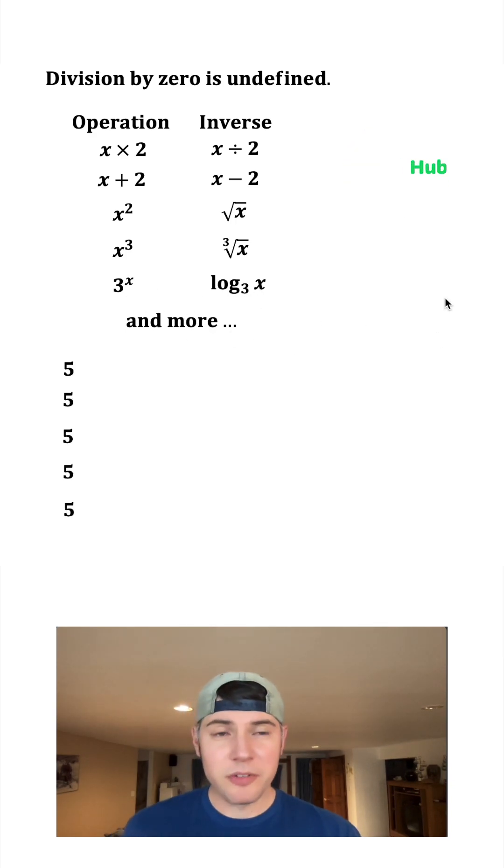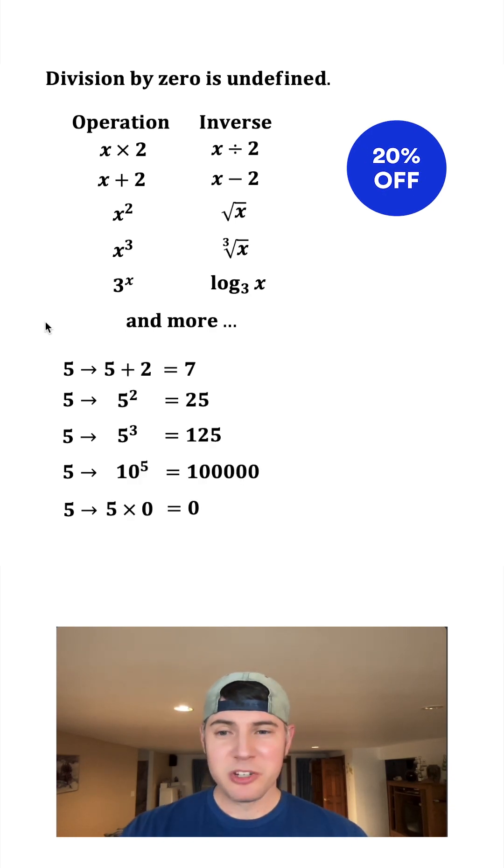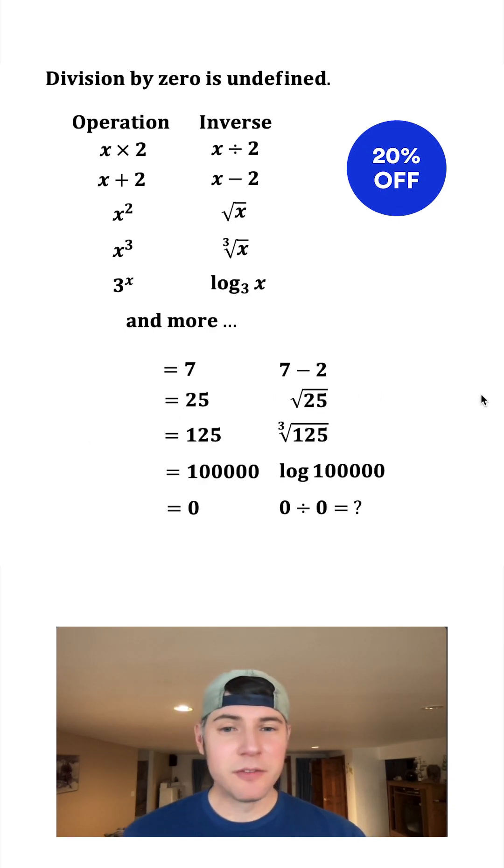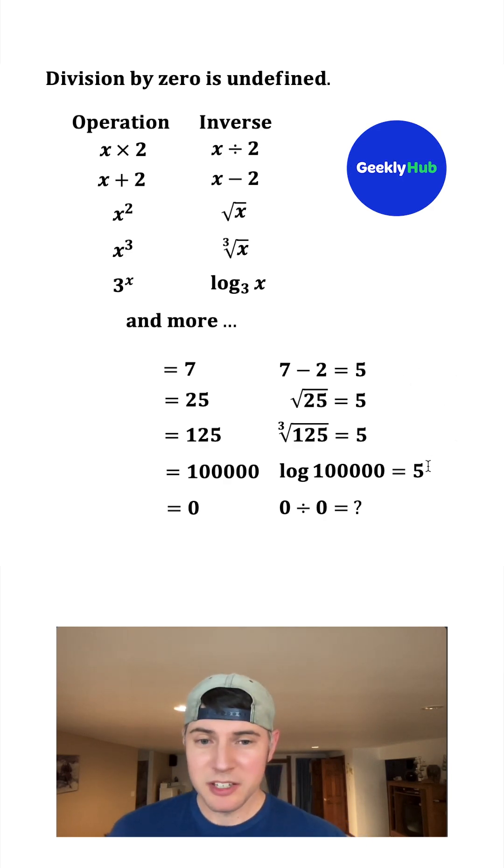So if we start with 5 and do some of the various operations, you're going to get different answers. But what's cool, if we get rid of what we started with and then do the inverse of those operations, they'll bring us back to 5. Well, at least these first four will.